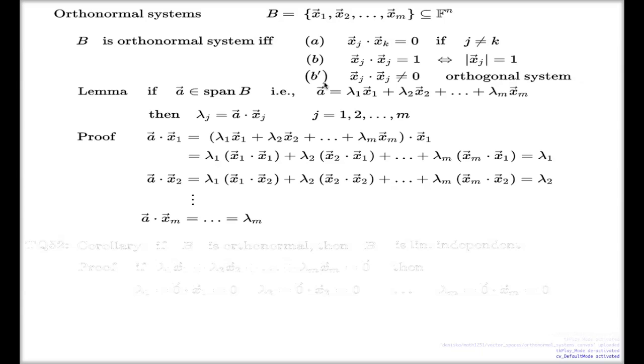There's one corollary to this lemma, which is in fact tutorial question 52. But here I will call it corollary. So it's a consequence of such a lemma. The consequence sounds like this: if B is orthonormal system, or is simply orthonormal, then such a system will necessarily be linearly independent. I didn't prove it yet. I already sort of hinted that orthonormal system, and in fact orthogonal system as well, they're always linearly independent.